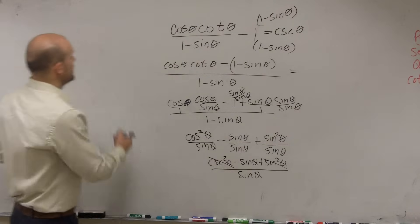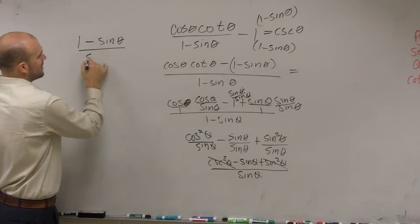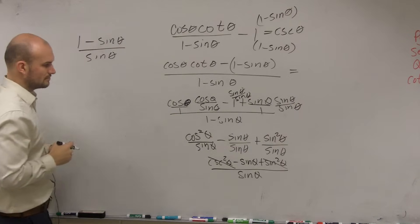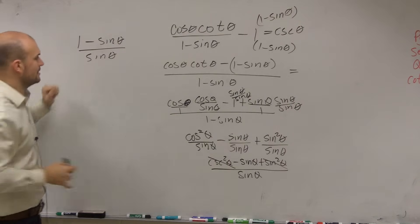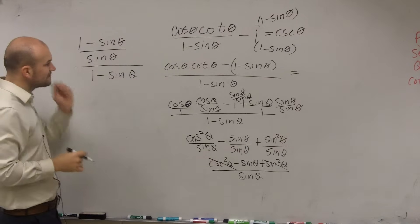So we could say that these are going to eliminate now to 1. So in reality, I actually have 1 minus sine of theta divided by sine of theta. And that's in my numerator. And that equals 1 minus, or that's divided by 1 minus sine of theta.